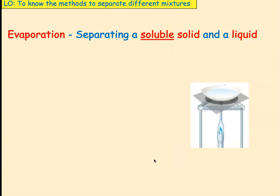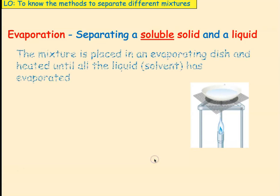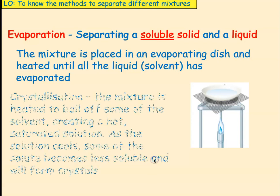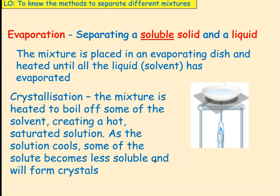Okay, our next separating technique is called evaporation. So, this time, we're separating a soluble solid from a liquid. We're going to place the mixture in an evaporating dish, and we're going to heat it until all the liquid or the solvent has evaporated. So, in this case, we're not really collecting the liquid, although we can.